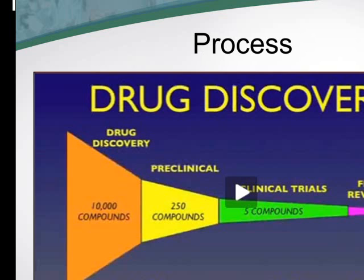Here's the drug pipeline. You begin by screening the efficacy of about 10,000 to 100,000 compounds in preclinical models such as tissue culture and animal models. You narrow that down to 250 compounds, then through clinical trials down to 5 compounds. By the time you get approval for that drug, it has narrowed down to one compound out of 10,000. That process takes about 15 to 20 years.